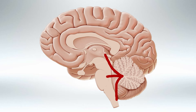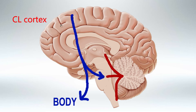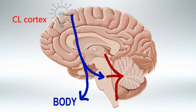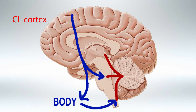To start, all motor signals will be initiated in the primary motor cortex. This motor signal will travel to the contralateral body and contralateral cerebellum using the middle peduncle. The contralateral cortex will command the body to initiate the movement and will also inform the cerebellum about the motor plan.